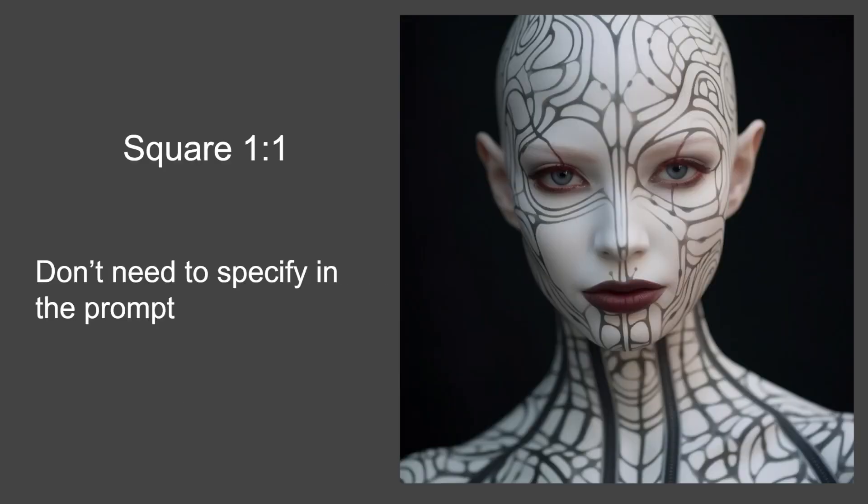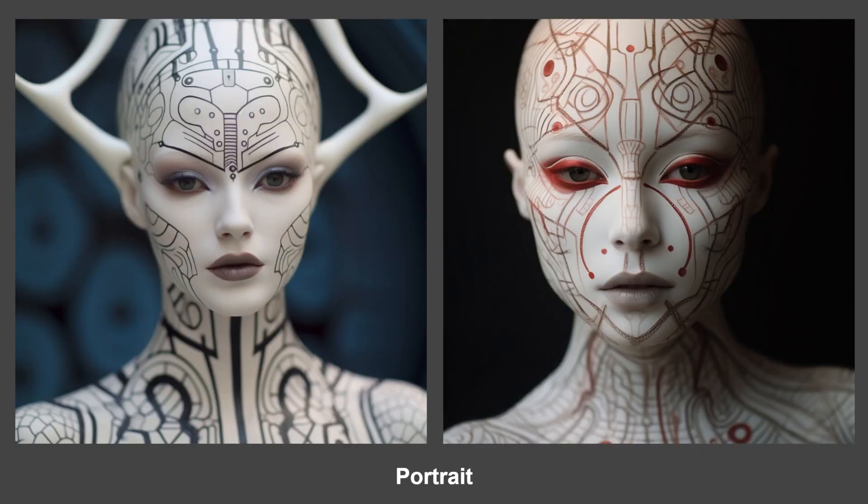Square, which is 1:1 — you do not need to specify this in the prompt because it is the default. It comes straight out of MidJourney, so you will always get a square if you don't specify the aspect ratio.